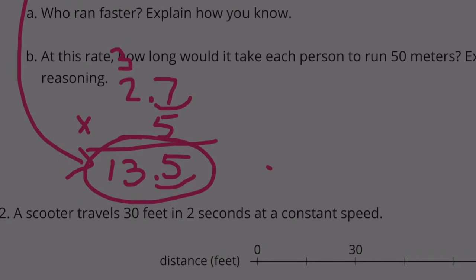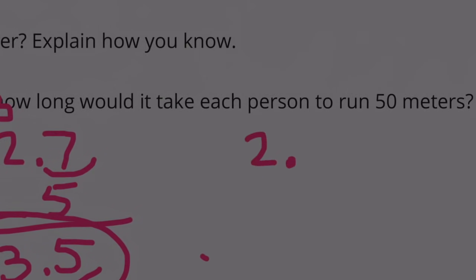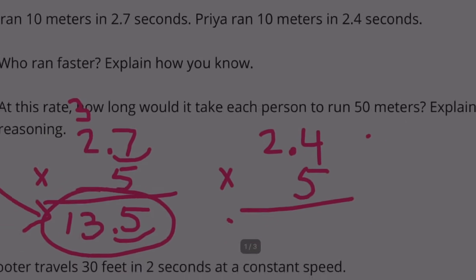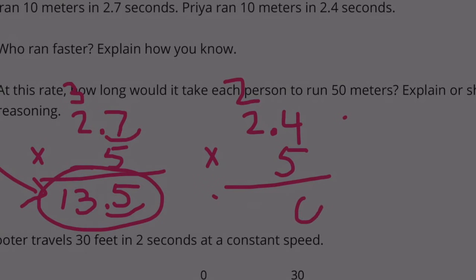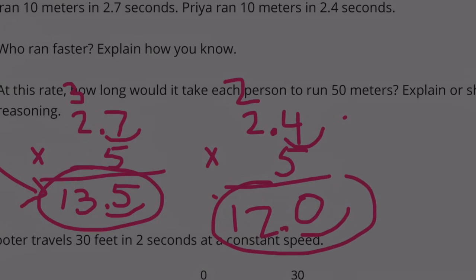So let's figure out how long it's going to take Priya. 2.4 times 5: 4 times 5 is 20. 2 times 5 is 10, plus 2 is 12. And we're going to move the decimal over one place. So Priya runs it in 12 seconds.